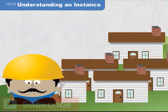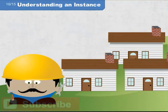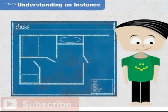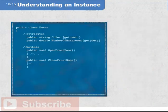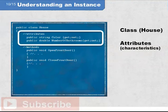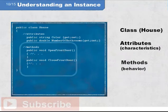But you are not a building architect, you're a computer programmer. In the programmer's world, the class is the blueprint. Here's what the blueprint for a house might look like in code. In this case, we are using the C# programming language, but the concept is the same in many languages. We see a class named House, a definition of its characteristics referred to as attributes, and its behavior defined as methods.